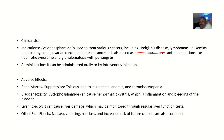Cyclophosphamide is used in treating various types of cancers, including Hodgkin's lymphoma, other lymphomas, leukemias, multiple myeloma, ovarian cancer, and breast cancer. Administration can be intravenous.